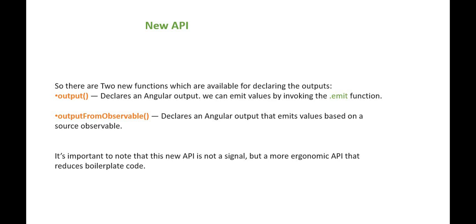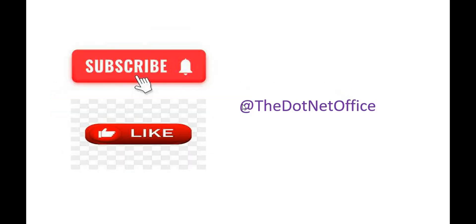We'll discuss outputFromObservable() in the next video. To summarize: instead of using EventEmitter, the new output() function is strongly typed, improves type safety, and ensures consistency with other Angular APIs like signal and input. That's it for this video — if you have any questions or doubts, please comment. Thank you.